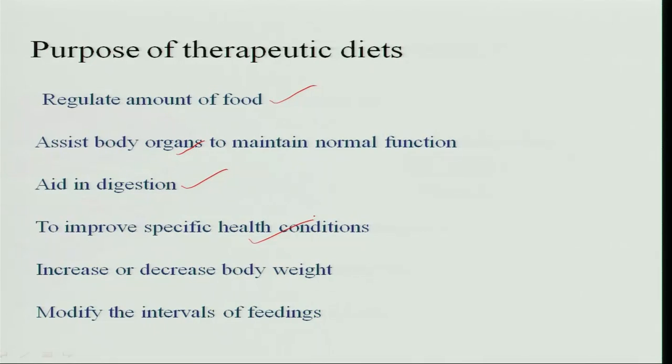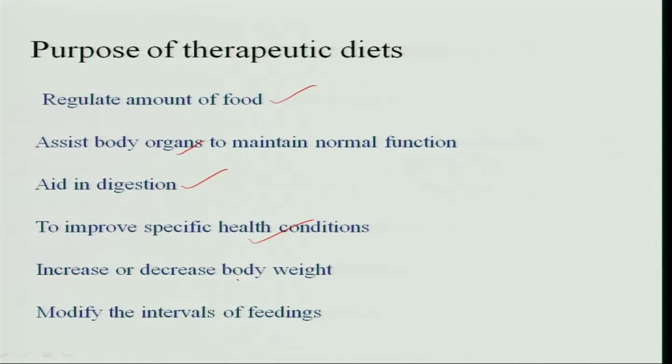The therapeutic diet should improve the specific health condition — for iodine deficiency, foods rich in iodine are given along with medicine; for anemia, the required nutrients are given; for B-complex deficiency, B-complex rich foods are supplemented to overcome the deficiency. The diet should help in increasing or decreasing body weight, and feeding intervals should be modified based on condition — if the person cannot eat much, feed more frequently, such as every 1 hour, gradually reducing to 4 to 5 hour intervals.